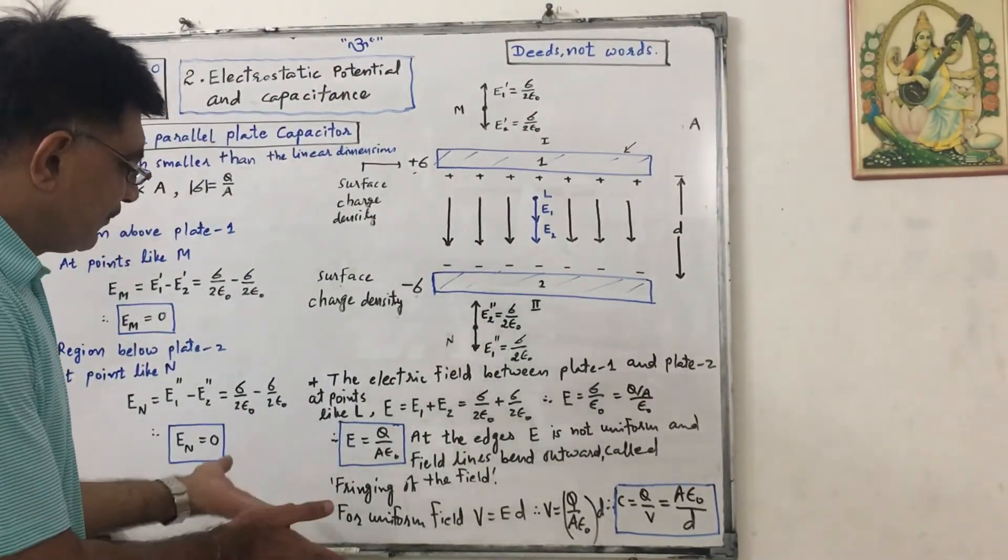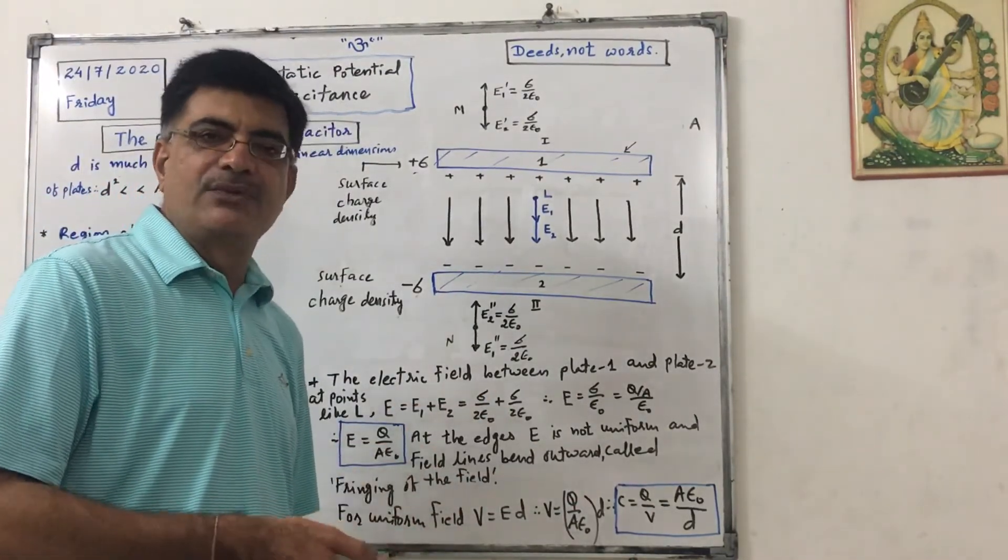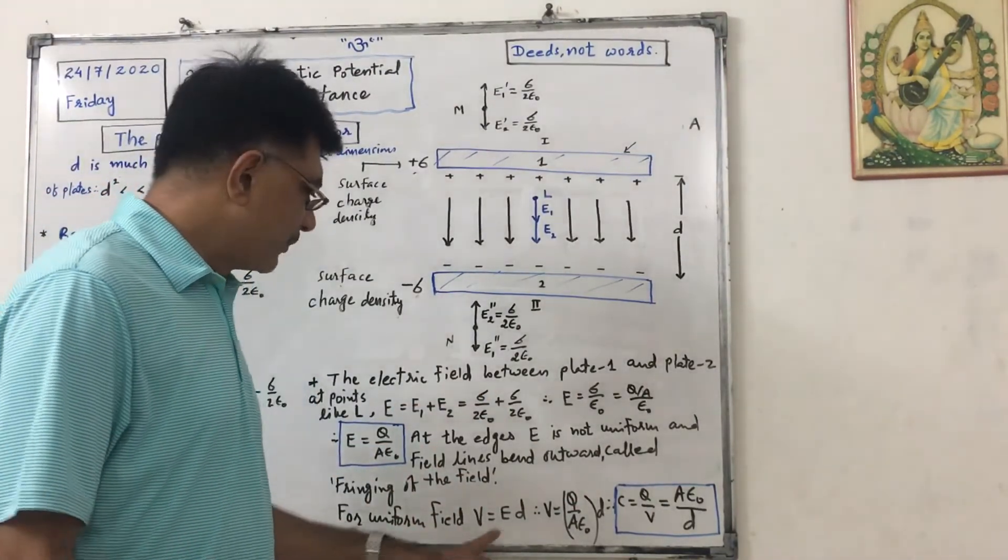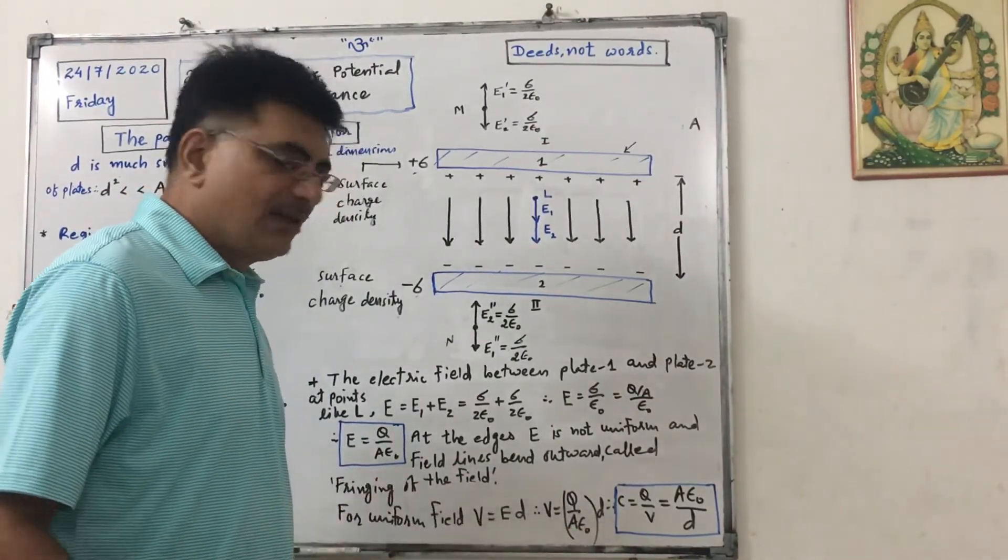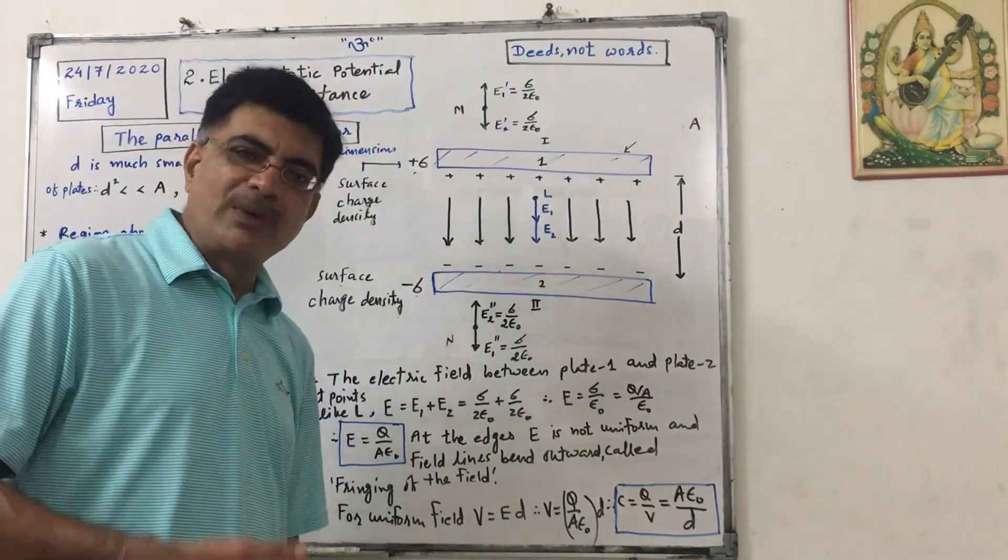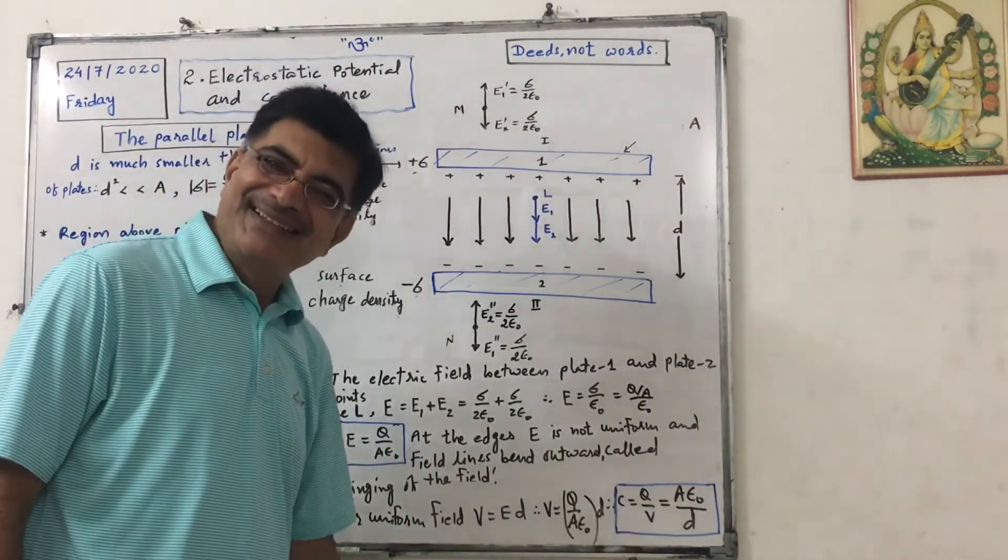So we know that for uniform electric field, as E equals to V by d, we can say V equals to E into d. So putting value of E, it will be Q upon A epsilon naught into d. We know that capacitance equals to Q by V. So Q by V will be equal to A epsilon naught upon d.